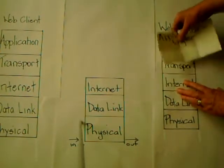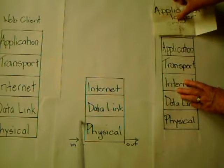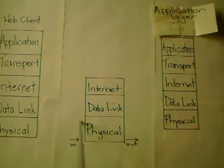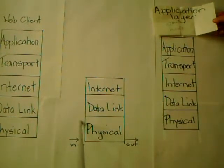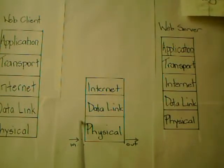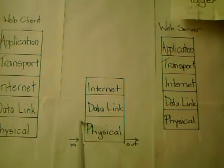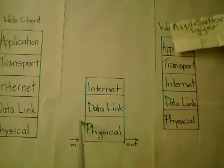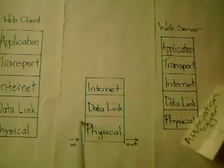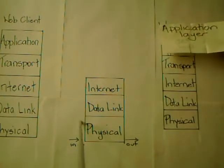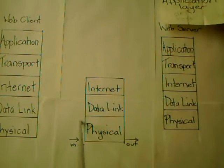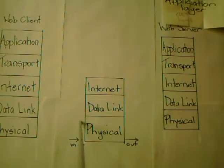The message is received at the application layer of the web server. The process then basically reverses: the application layer fetches the index page or whatever was requested, and sends it all the way back down with encapsulation and de-encapsulation occurring in reverse order.